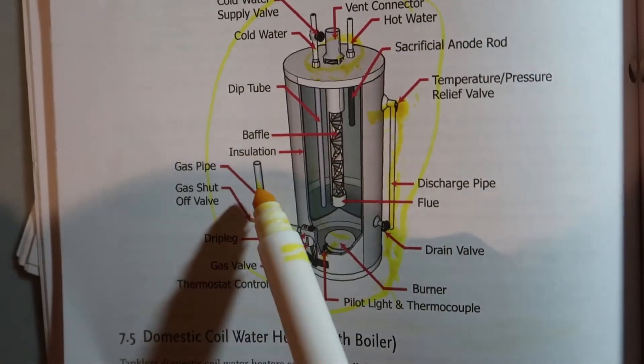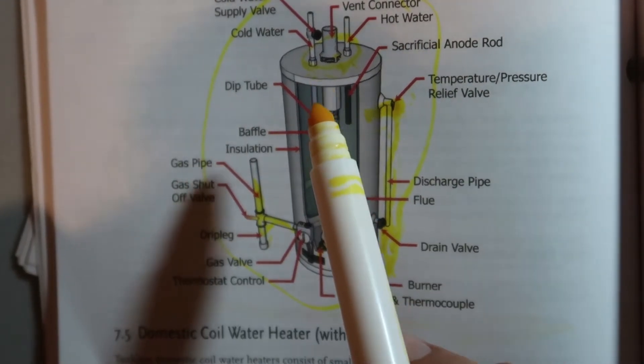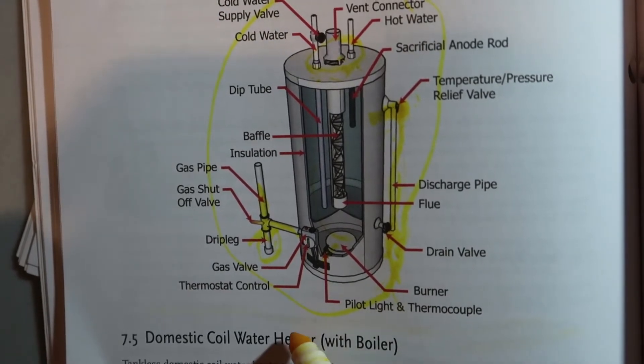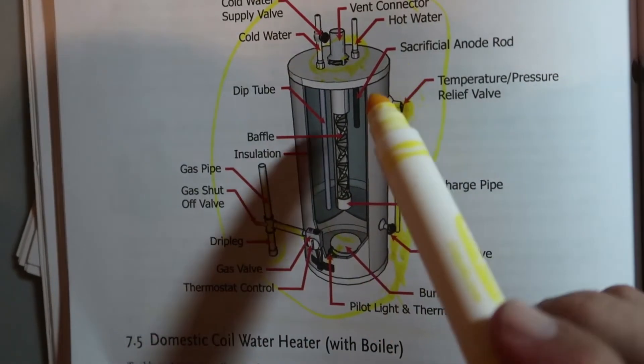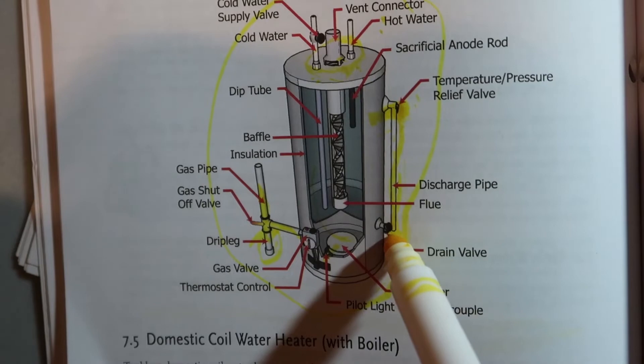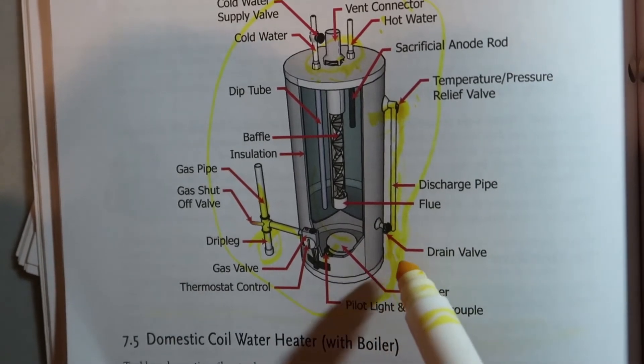We'll also have a CO detector around that, see if there's any excess CO coming out, which would be really really bad. You want to make sure that you have a drip leg here. That's basically it as far as water heater maintenance.